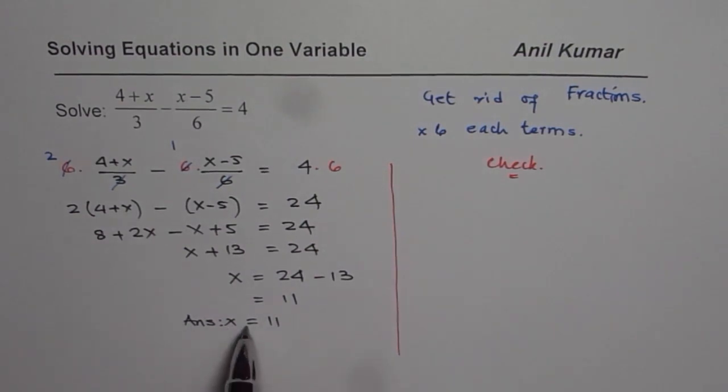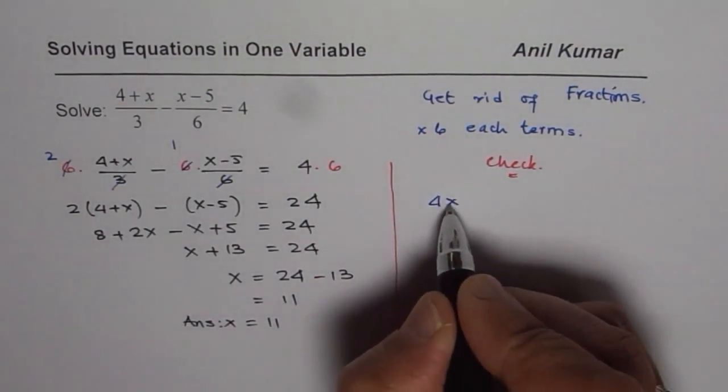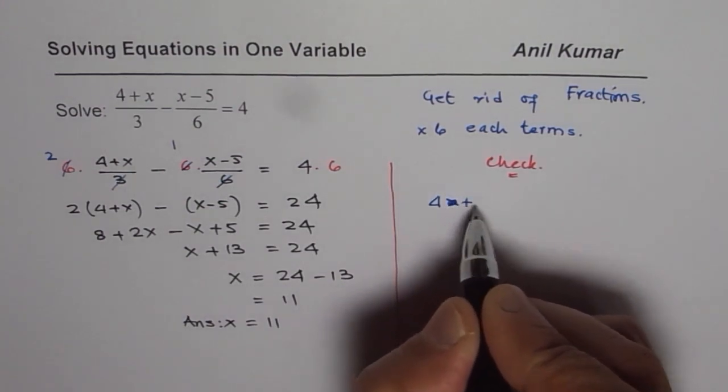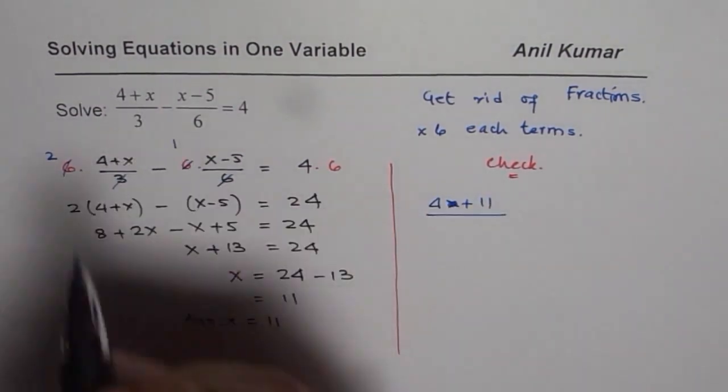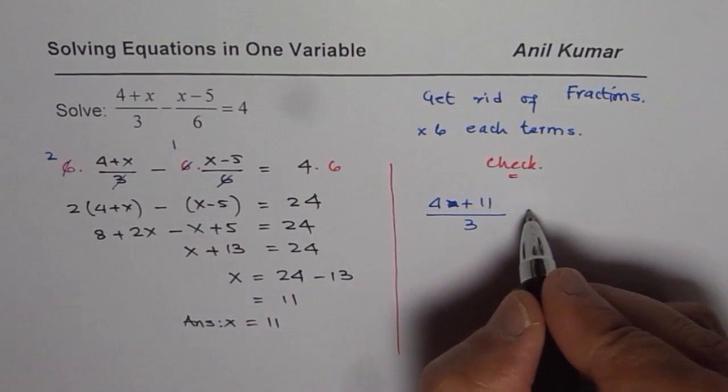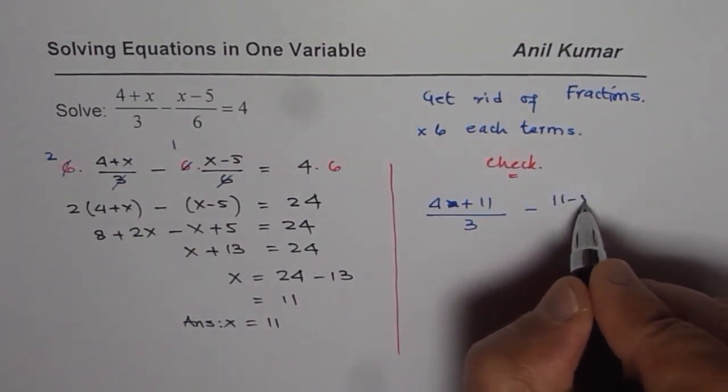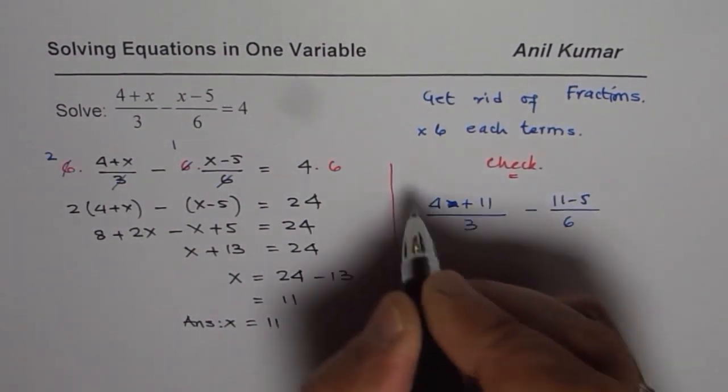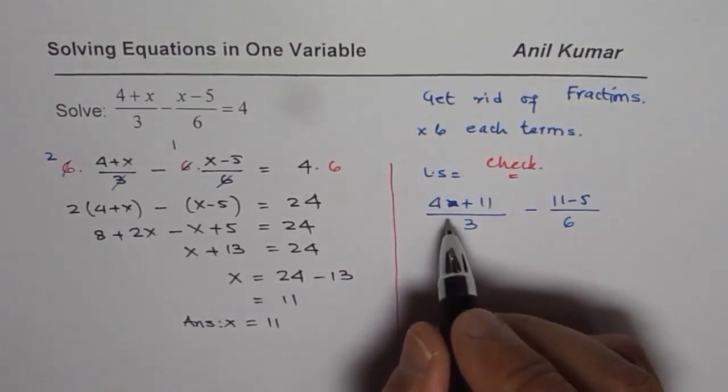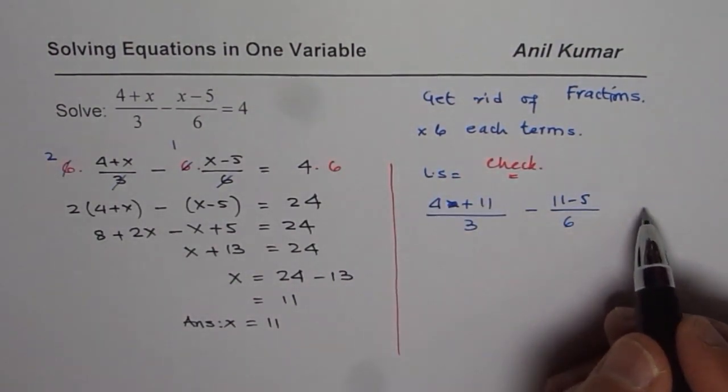When we say x = 11 is the solution, if I substitute x as 11, that means 4 plus 11 - instead of x I am writing 11. We are checking the left side. We will begin with the left side and see whether it equals the right side, which is 4 in this case.